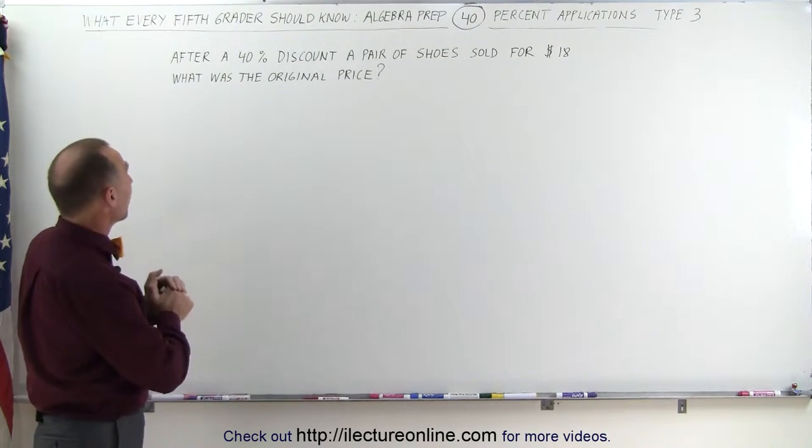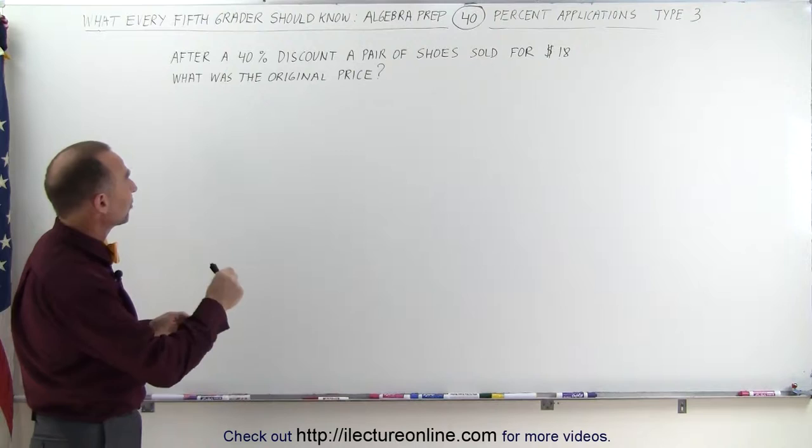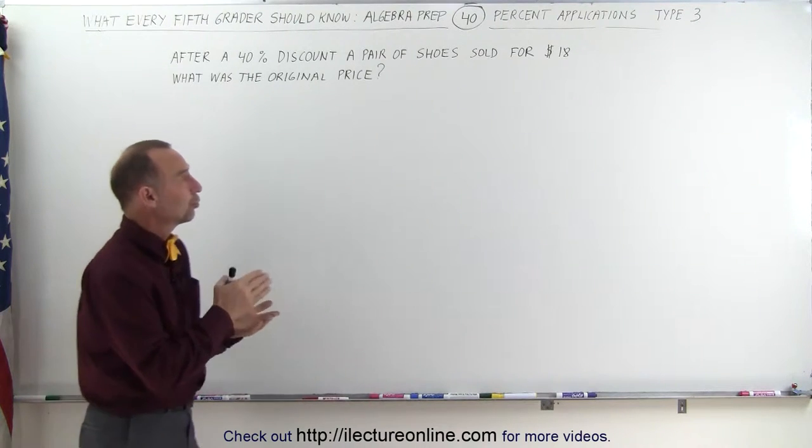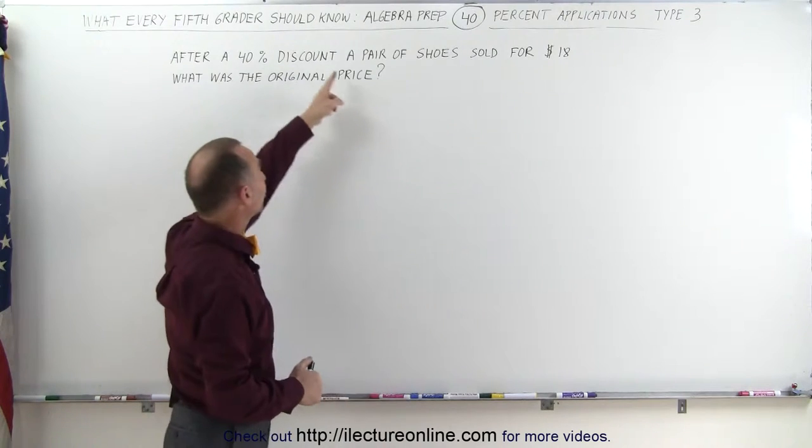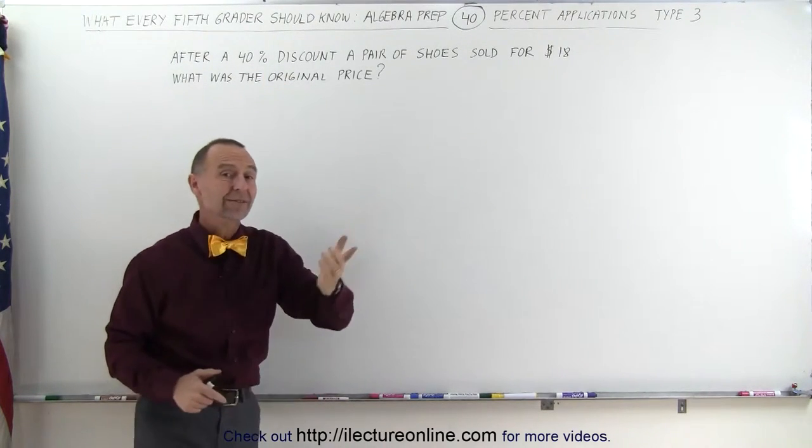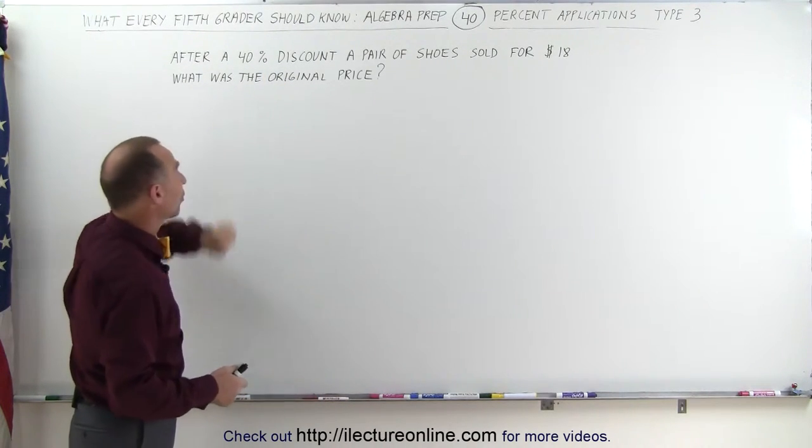In this case, the problem reads as follows. After a 40% discount, a pair of shoes sold for $18. That means this is the sale price after we took 40% off the original price. And the question is, what was the original price?